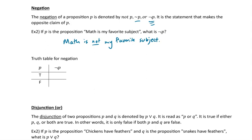The negation is just the opposite of the original claim. For the truth table: if P is true, not P is false — if math is my favorite subject, then 'math is not my favorite subject' must be false. And vice versa: if P is false, not P must be true. They always have opposite values because they say opposite things.